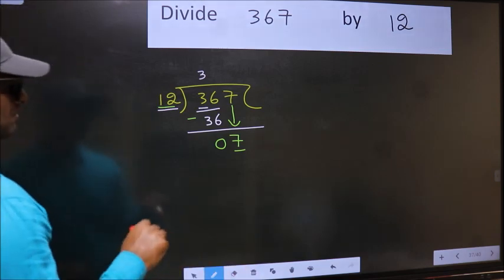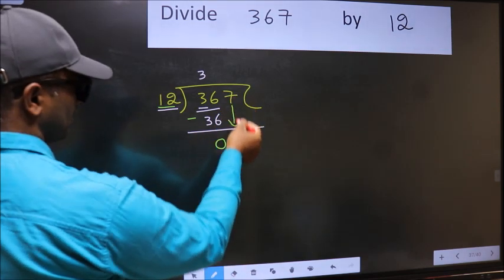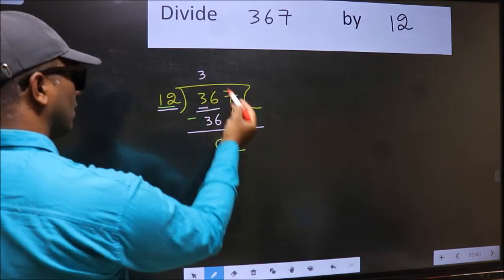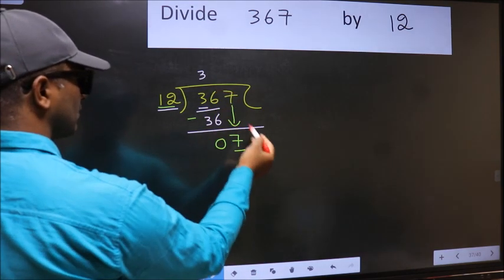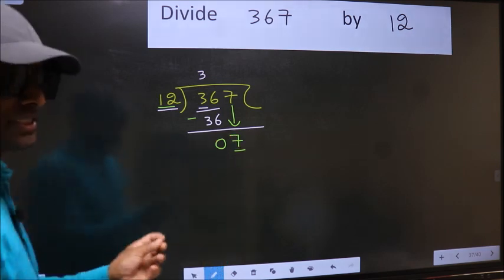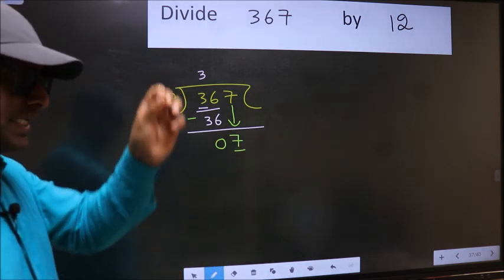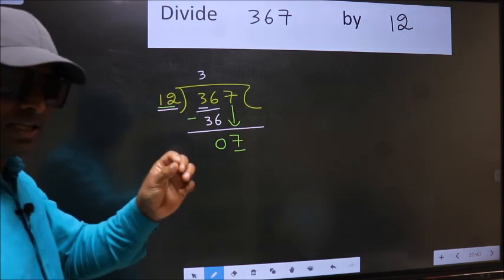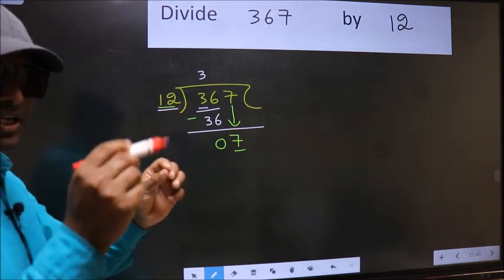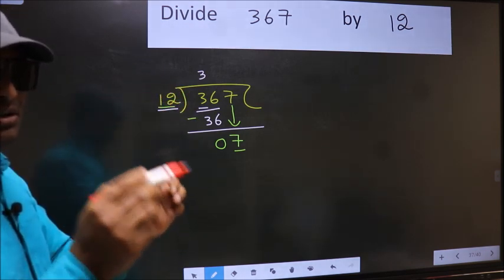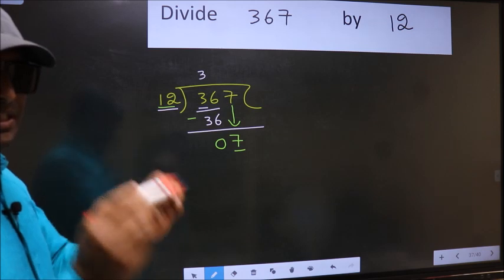Because just now you brought this number down, and in the same step, you want to put dot and take 0, which is wrong. I repeat: bringing the number down and putting dot take 0, both at the same step, you should not do.